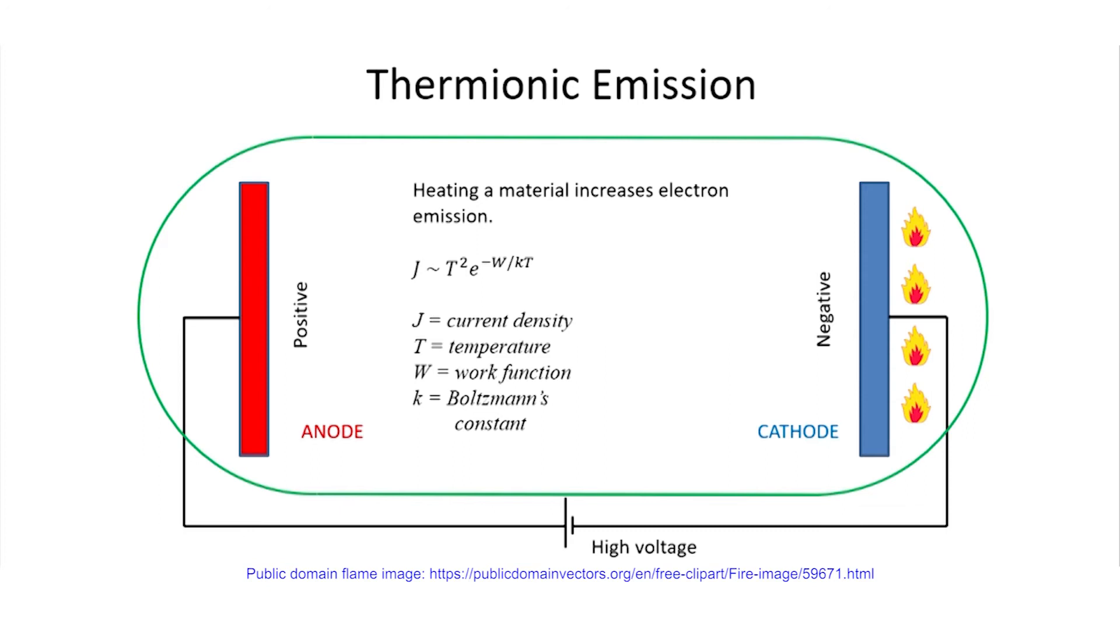One way to make electron emission easier is to heat up the cathode. If the cathode is heated externally, then the thermal energy helps the situation. The current that ultimately flows has a rough dependence on the temperature and work function in this equation. W here is work function. So a larger work function obviously causes the current flowing to be reduced, but a higher temperature causes the current flow to increase.